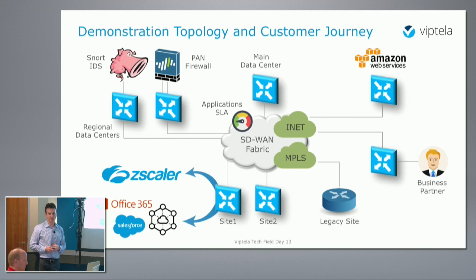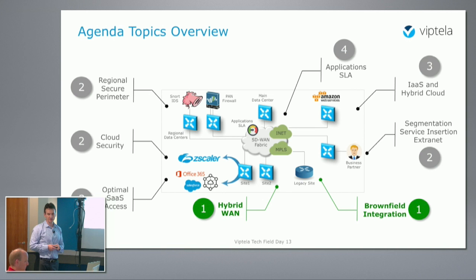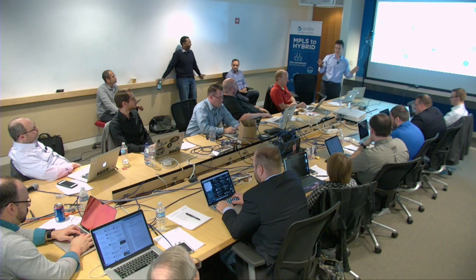So we're going to start with the first step: hybrid WAN and brownfield integration. Before I step into it, any questions? Feel free to interrupt me any time.